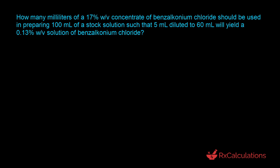Let's start with a quick schematic to illustrate what the question is actually asking. We have a concentrate with a concentration of 17% weight-by-volume. We want to prepare a stock solution with a volume of 100 milliliters. We don't know the concentration of the stock solution, and we don't know the volume taken from the concentrate.